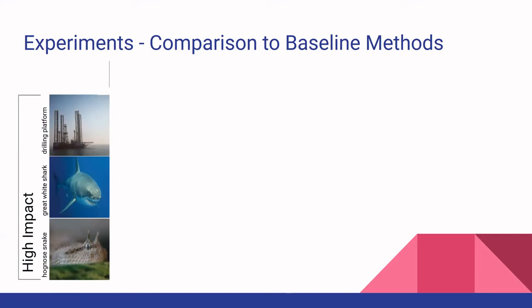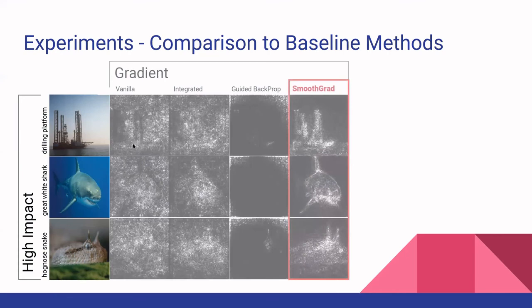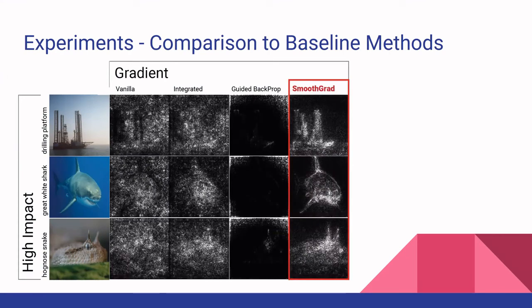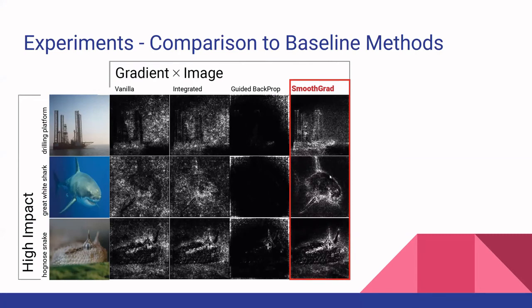These images are examples from 200 samples chosen from ImageNet where SmoothGrad had high impact. All these images — the drilling platform, the shark, and the snake — have uniform backgrounds. For uniform backgrounds, SmoothGrad has a better result for image coherency than integrated and vanilla. Also, guided backpropagation actually does not work at all with uniform backgrounds — you can only slightly see some edge outlines. Multiplying the gradient by the image shows their method for uniform backgrounds is much smoother than the other methods.